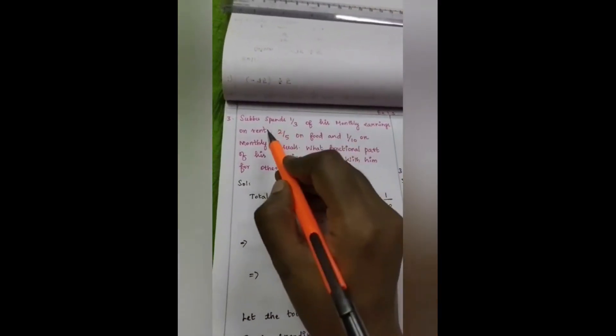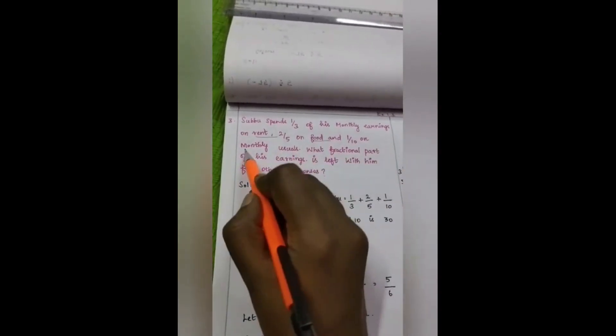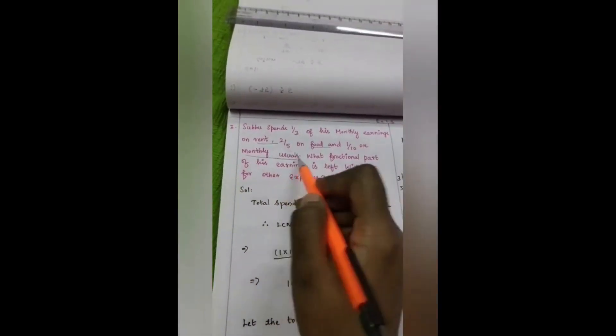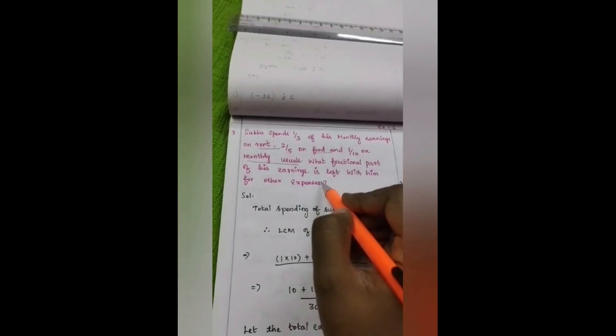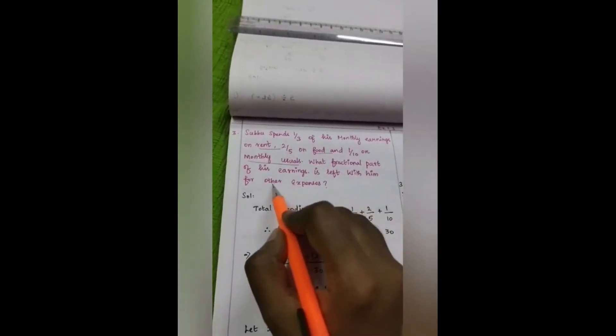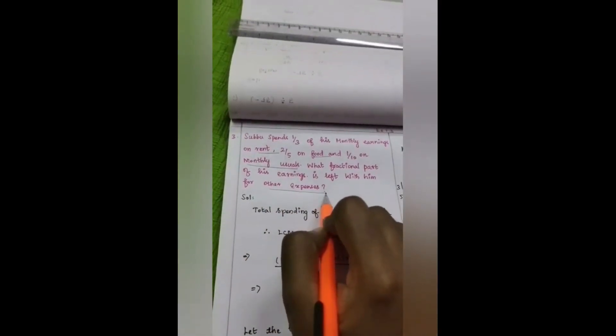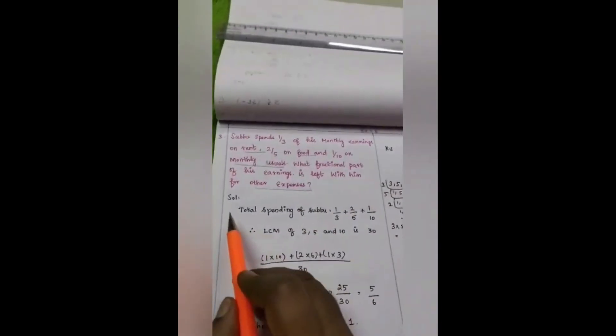See here, they give Subbu's spending on rent, food and monthly usuals. What they tell us to find? After spending all those things, how much money is he left with for other expenses? That's what we're going to find. Let's see the solution.